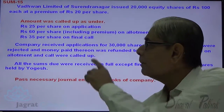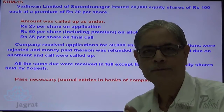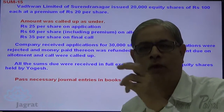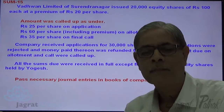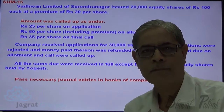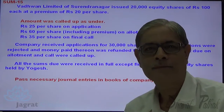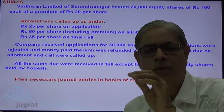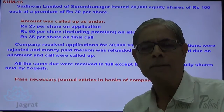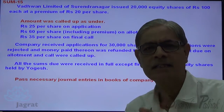This premium is demanded with allotment. Premium is a capital income of the company; that income gets credited to the security premium account. When premium is demanded with allotment, the journal entry is: equity share allotment account debit to security premium account credit. If a premium is demanded with first call, the entry is: equity share first call account debit to security premium account credit. When allotment money or first call money is received, we write: bank account debit to share allotment account, or bank account debit to share first call account.